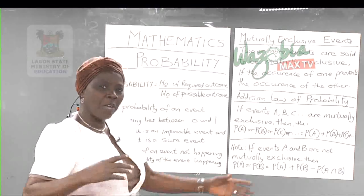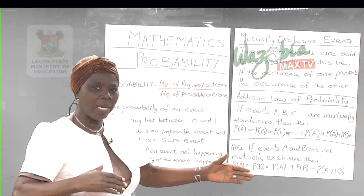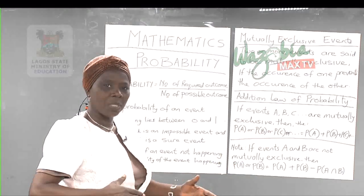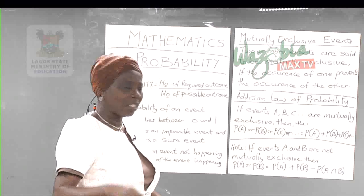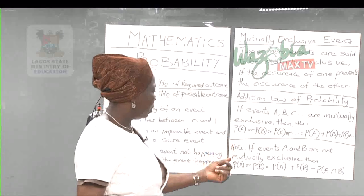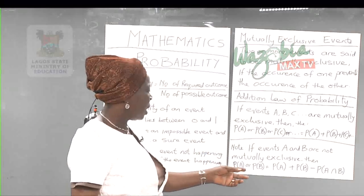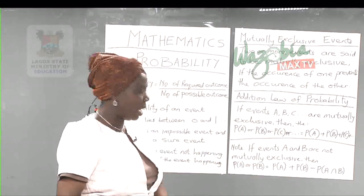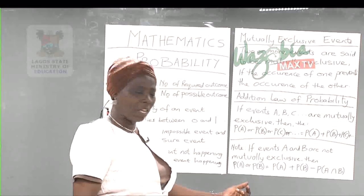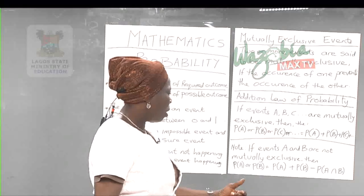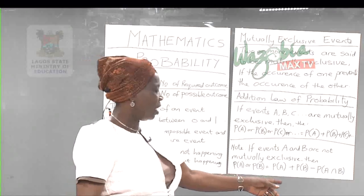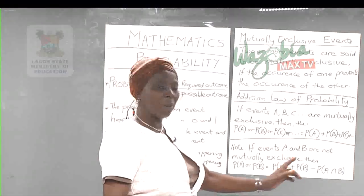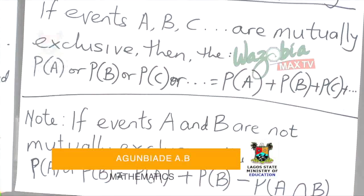What if the two events are not mutually exclusive? Then it follows set theory: the probability of A or B occurring equals the probability of A plus the probability of B minus the probability of A intersection B.